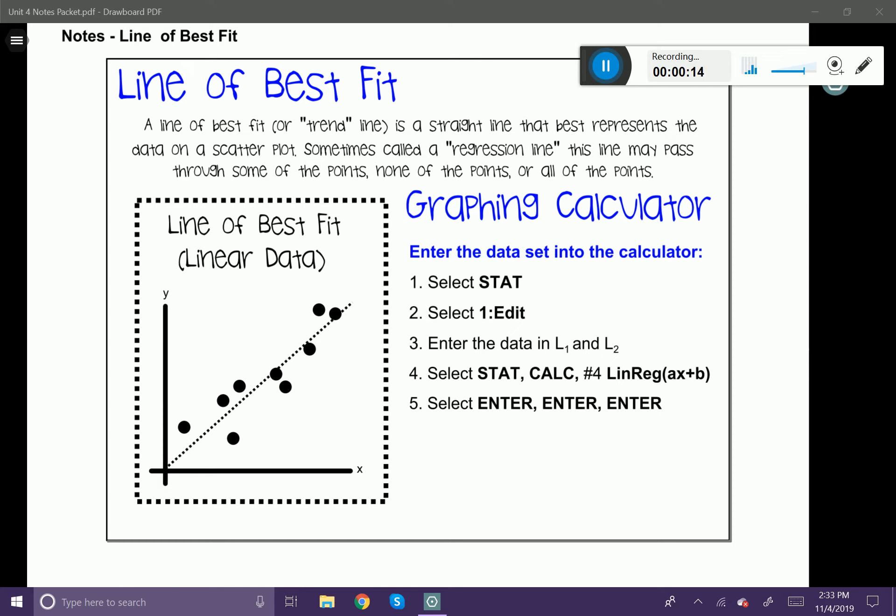Sometimes called a regression line, this line may pass through some of the points, none of the points, or all of the points.